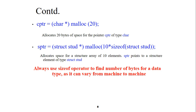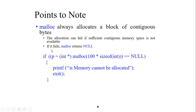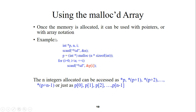We can also create a character pointer or a structure pointer using malloc with the sizeof operator each time. Some important points: malloc always allocates a block of contiguous bytes. The allocation can fail if sufficient contiguous memory space is not available — if it fails, malloc returns NULL. I will discuss checking whether memory is allocated or not in my next video. Thank you for watching, please subscribe to my channel Remoney Education. I am Strikan Singh — if you have any query, post it in the comments.